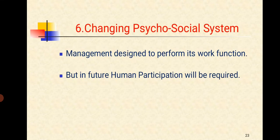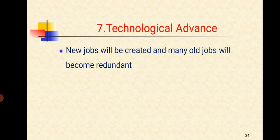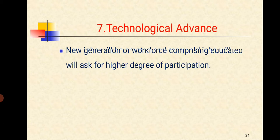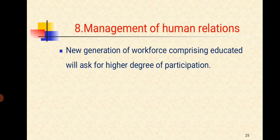And sixth one is Changing Psychosocial System. Management designed to perform its work function but in future human participation will be required there. And seventh one is Technological Advance. New jobs will be created and many old jobs will become redundant. This means technological advance. And the eighth one is Management of Human Relations. New generation of workforce comprising educated will ask for higher degree of participation.